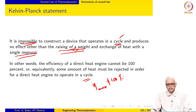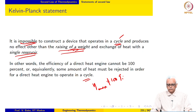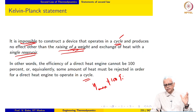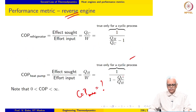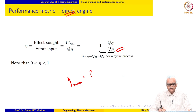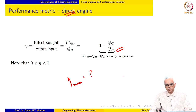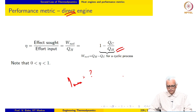So eta max is not equal to 100%, which is what this statement says. This statement is based on experience — there is no proof for it. Heat accesses the internal energy of the working substance, which is a disordered mode, and not all of the heat can be converted to work. This answers the question: can eta max be 100%? We have now ruled that out.